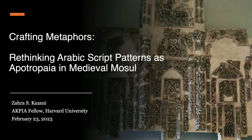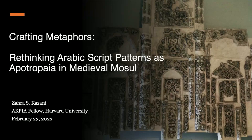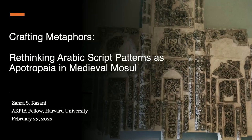In this evening's lecture, Zahra looks at visual compositions created using Arabic script in 12th and 13th century Mosul in northern Iraq. It takes the case of a large stucco panel from the mosque of Nuruddin Zangi, designed with knotted interlacing and framing inscriptions. Focusing on the extra-linguistic meanings of the script, the discussion places the intricately crafted script patterns as part of the surge of magical practices in the Jazira, as well as the aesthetic outlook of metaphorical imagery and the rich artistic heritage of Mosul.